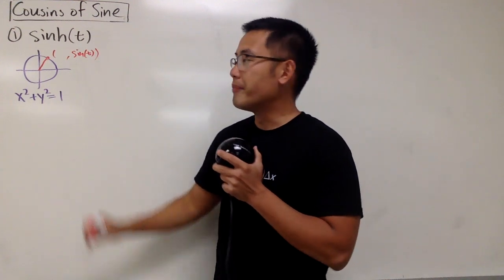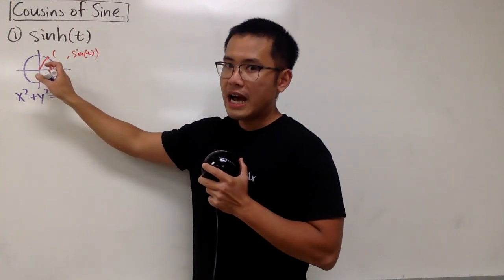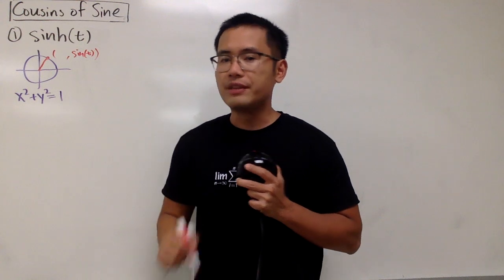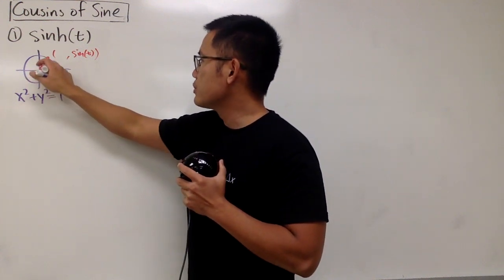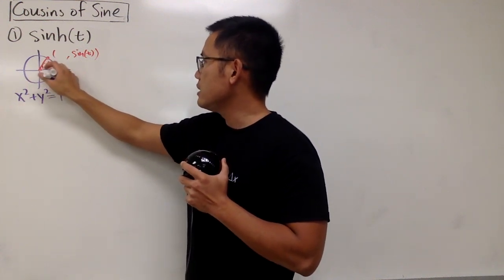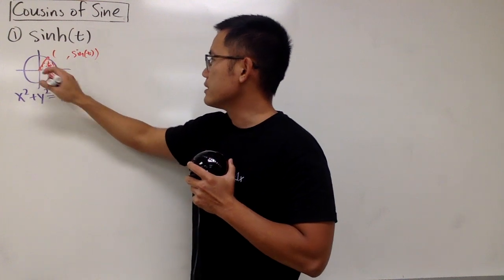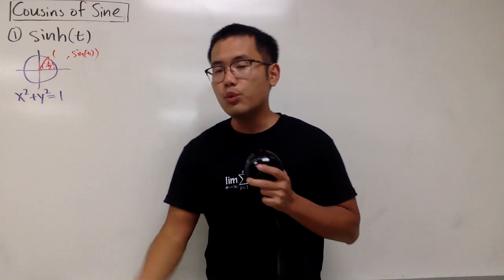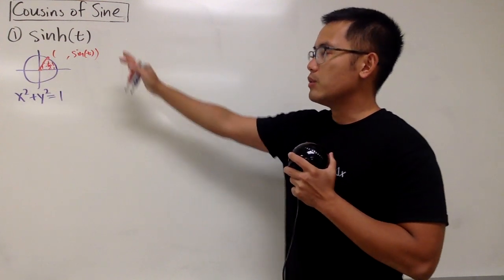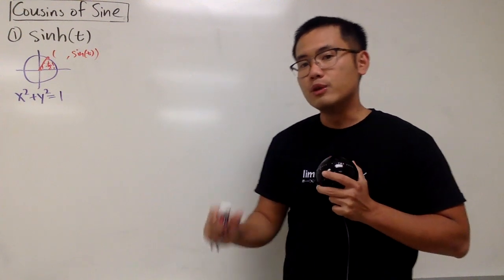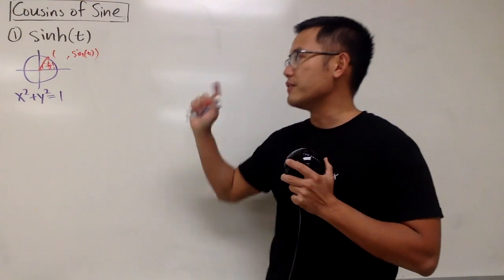Another way to look at this is that this little area is precisely half of t — the area of this sector is t over 2. This is another way to interpret that. And the reason we want to talk about this is because for the hyperbolic sine function, you just look at the hyperbola instead of a circle.